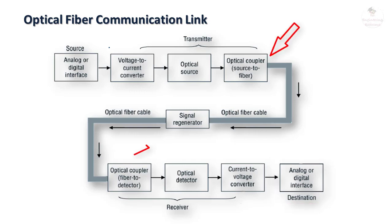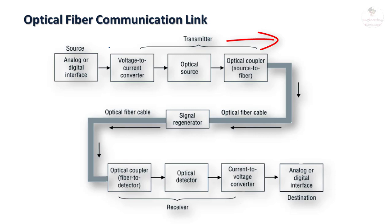There are two couplers — one at the transmitter side and another at the receiver side. The function of these couplers is to couple the information from the optical source to the fiber optic cable, and from the fiber optic channel to the optical detector.